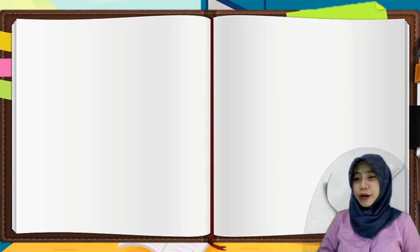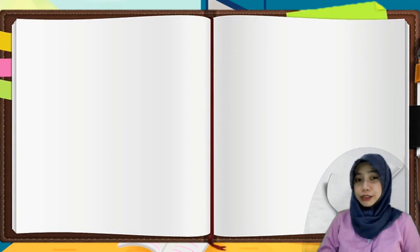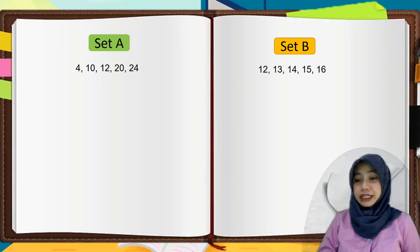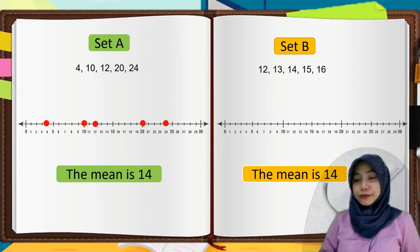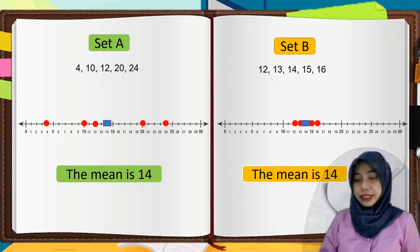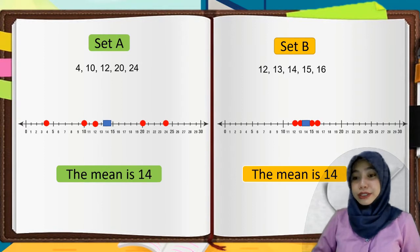Do you sometimes think how it looks like to graph the data that we have collected? For example, we have the given data a while ago of set A and set B. What if we graph this in a number line? In set A, we have 4, 10, 12, 20, and 24. And in set B, we have 12, 13, 14, 15, and 16. The mean of both set A and set B is 14. This is how it looks like to graph data in a number line.